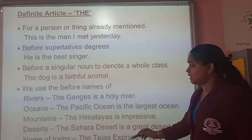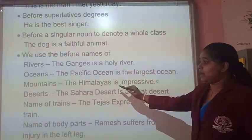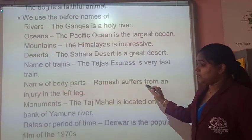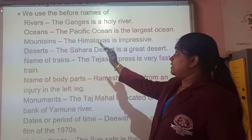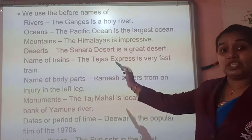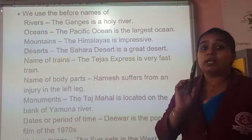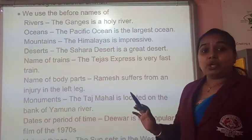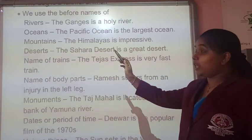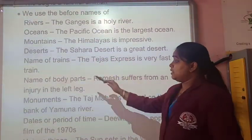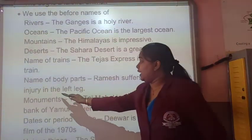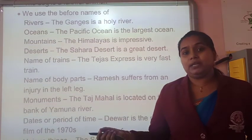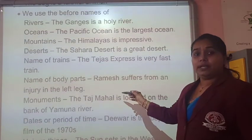We also use 'the' before names of certain things: rivers — 'the Ganga'; oceans — 'the Pacific Ocean'; mountain ranges. Here you have to remember — mountain ranges, not a single mountain. When we take the name of a single mountain, we do not use the definite article 'the'. But when we talk about mountain ranges as a stretch, we use 'the'. Also before deserts, names of trains, names of body parts — for example, 'Ramesh suffers from an injury in the left leg.'